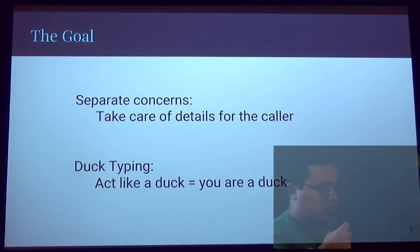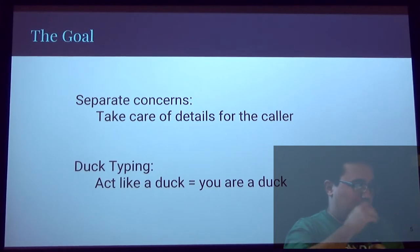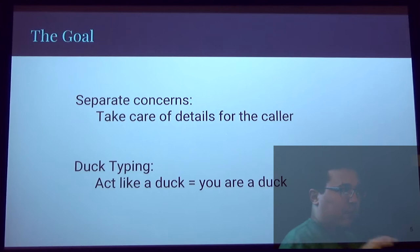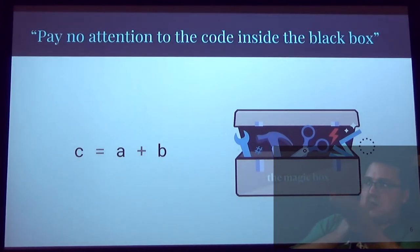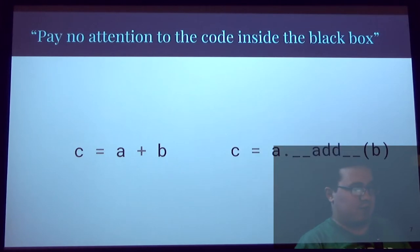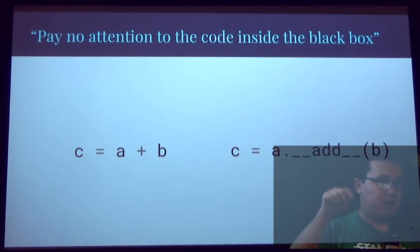Magic methods are cool because they help you separate concerns in your code. The caller doesn't want to do crazy gymnastics right where they're doing high-level logic — they just want it to work. It's also for duck typing: you can make things that look like other things, pass them in, and whatever takes them will be happy to treat your object just like a dictionary if you implemented the correct methods. For example, C equals A plus B is internally calling `A.__add__(B)` — 'dunder' meaning double underscore — and giving that back into C.